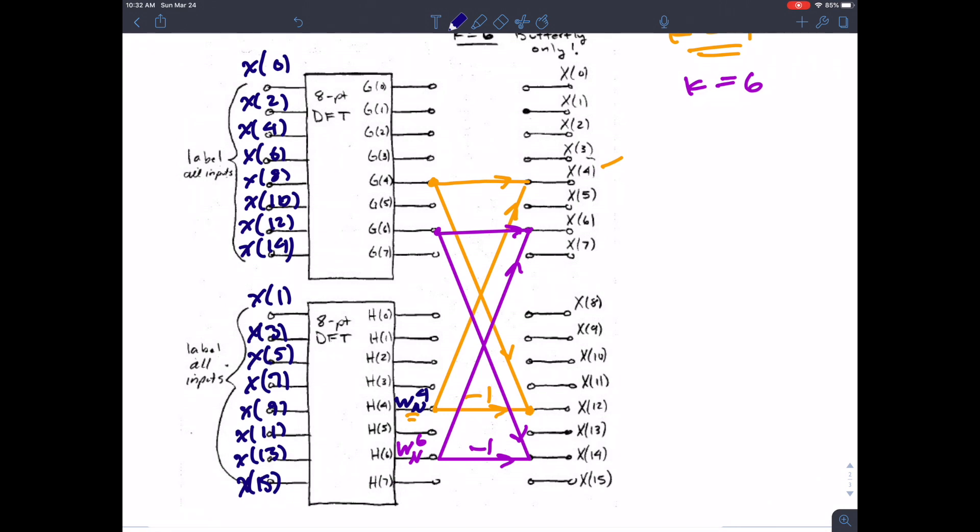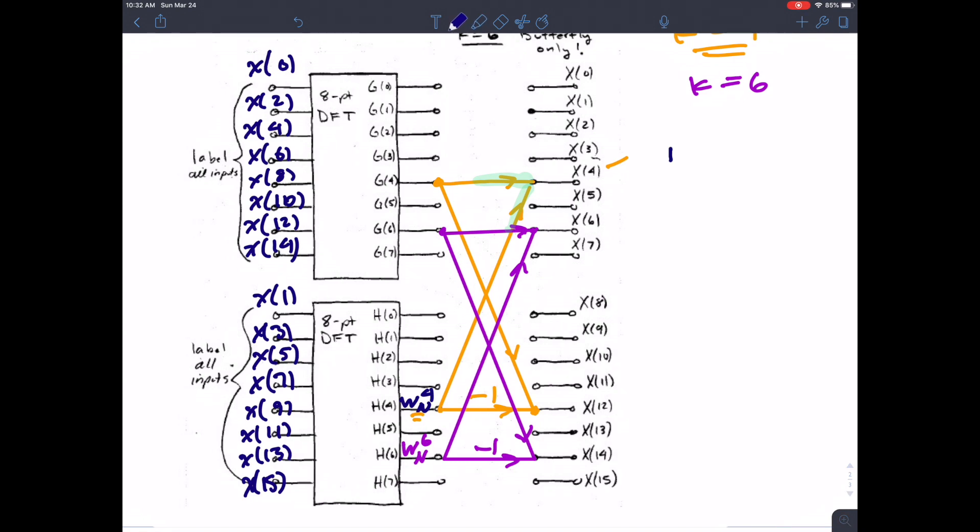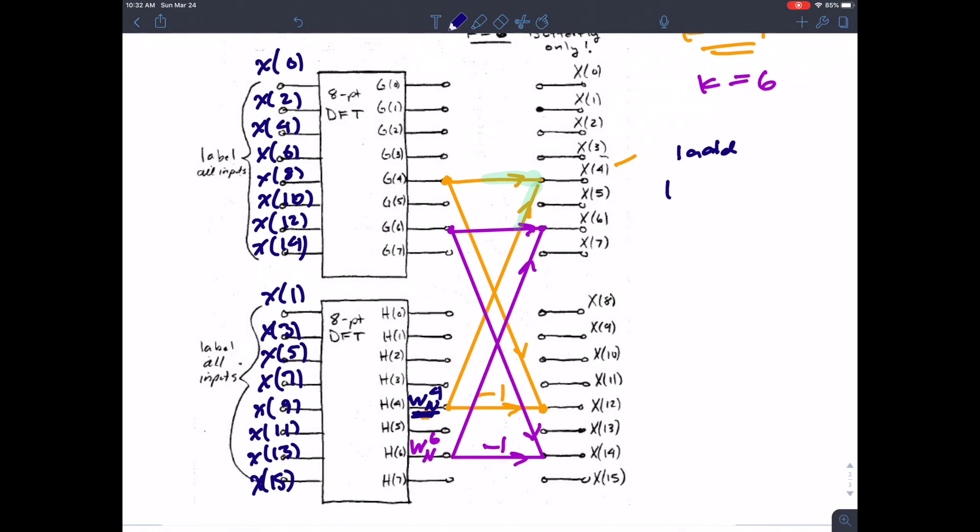So considering the butterflies one at a time, let's look here with highlighting green. I have two lines coming in at x4 so that means I have one add, one complex add at x4. And then I have this w that shows up on the k equal 4 butterfly and so that would be one complex multiply there.